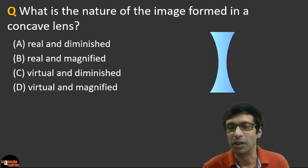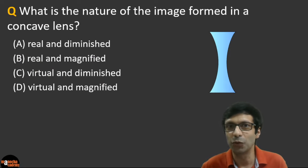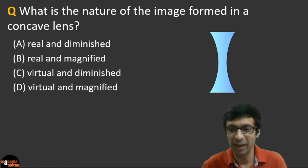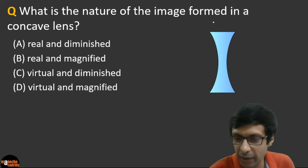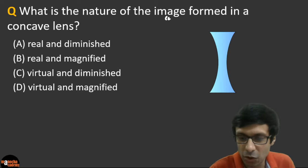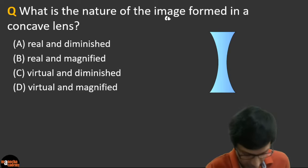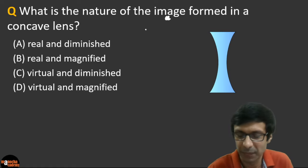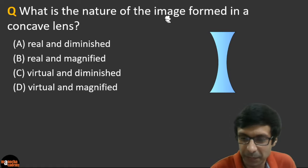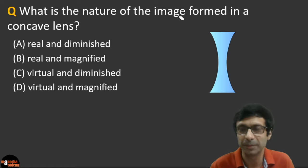Here's our first question: What is the nature of the image formed in a concave lens? As you can see in the picture here, this is a concave lens. Can you tell me what is the nature of the image formed?